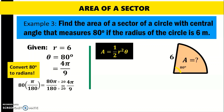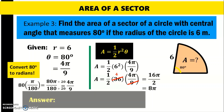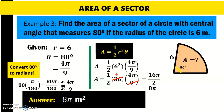The equation is A equals one-half r squared theta, and r is given to be 6. So we have A equals one-half times 6 squared times 4 pi over 9. And 6 squared is 36. We can cancel 9 there, leaving 4. Then 4 times 4 pi is 16 pi, and we have 2 in the denominator. So 16 pi over 2 simplifies to 8 pi, since 16 divided by 2 is 8. Therefore, the area of the sector is 8 pi square meters, or approximately 25 square meters.